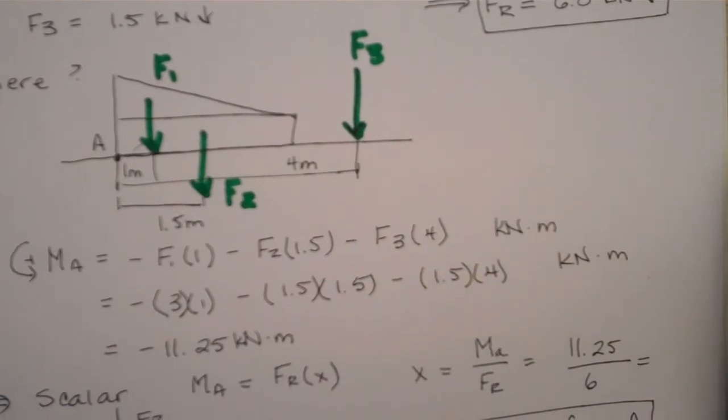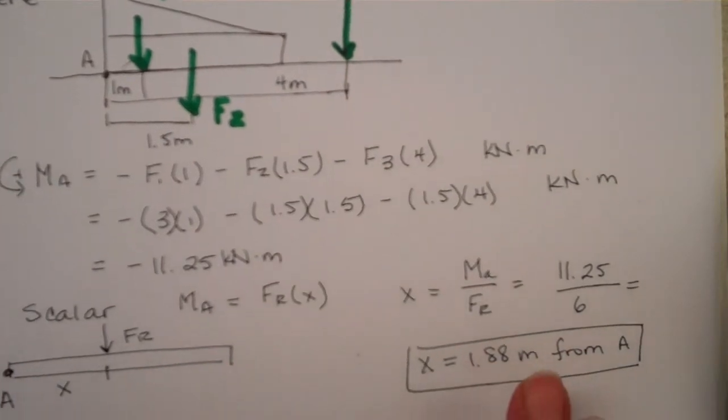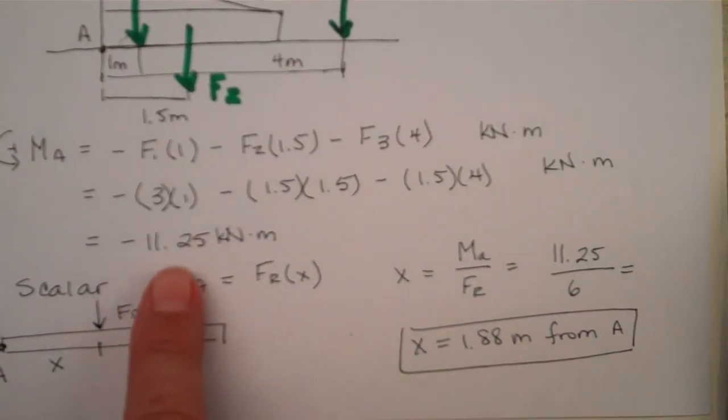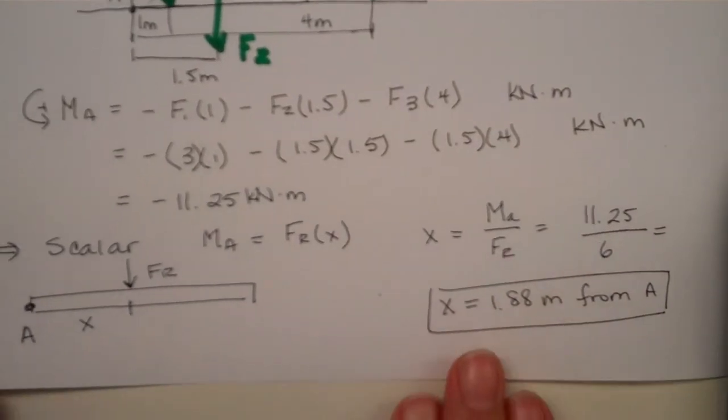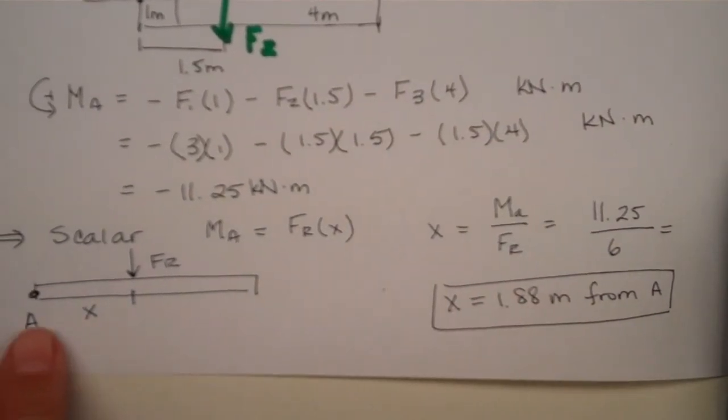So, putting in what we had for force one, force two, force three, we can see that the net moment is negative, and the negative tells us clockwise, 11.25 kilonewtons per meter. So, we've got a resultant force. We know what the moment is about point A.